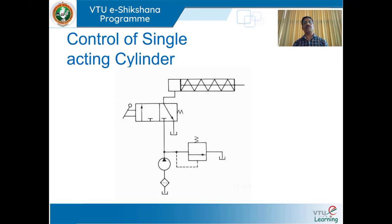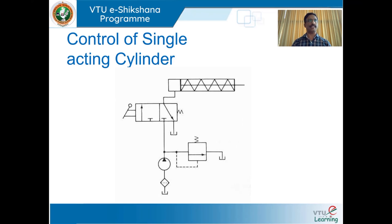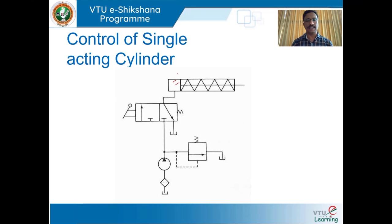Next we shall move on to control of a single acting cylinder. Here we shall discuss how a three-way, two-position directional control valve is used to control a single acting cylinder. Single acting means control pressure is applied only onto one side of the piston — that is known as a single acting cylinder.